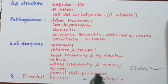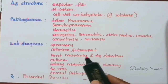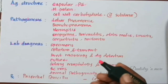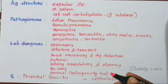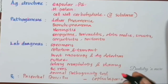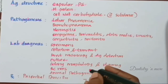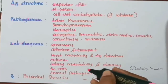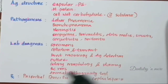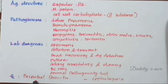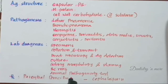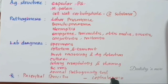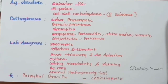For the animal pathogenicity test, from specimens where organisms are expected to be scanty, intraperitoneal inoculation in mice may be used. Inoculated mice die in 24 to 48 hours, and heart blood and peritoneal exudate of the animal show pneumococci. For treatment, the antibiotic of choice is parenteral penicillin, and cephalosporin is indicated in cases of penicillin resistance.